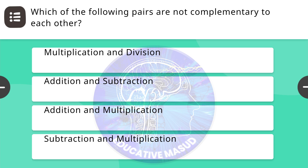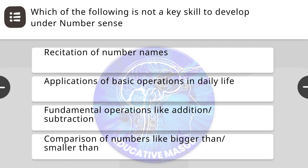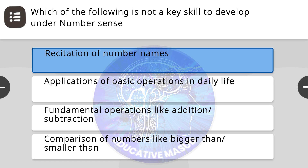Next question: which of the following pairs are not complementary to each other? Correct answer is subtraction and multiplication. Next question: which of the following is not a key skill to develop under number sense? Correct answer is recitation of number names.